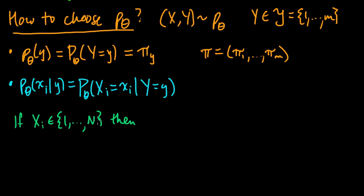But then, the natural choice would be, for example, you might choose this thing, p theta xi given y, to be some numbers, let's call them, I don't know, let's call them q of xi and y.